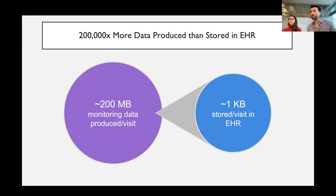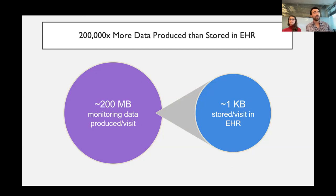By almost any estimate, there are orders of magnitude more data produced in healthcare in general — and in the ED in particular — than are actually stored in the electronic health record and therefore accessible for clinical decision-making. This is an example of vital signs alone, which is just a small fraction of total data. Vital sign monitoring is one of the fundamental tasks of emergency medicine and critical care, and it's well known that abnormalities and changes in vital signs can have real diagnostic significance. Yet only a tiny fraction of those vital signs are actually reported in the health record.